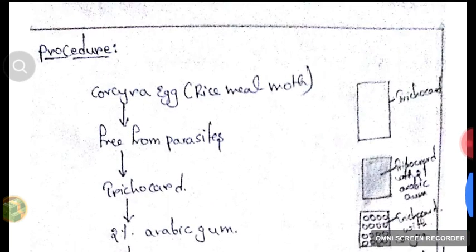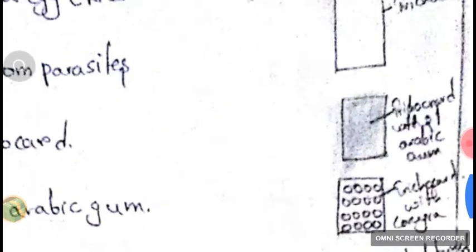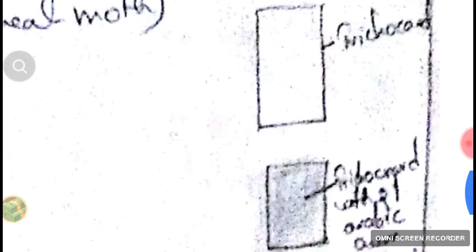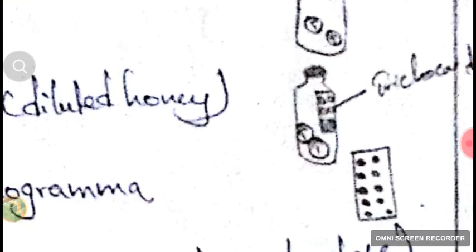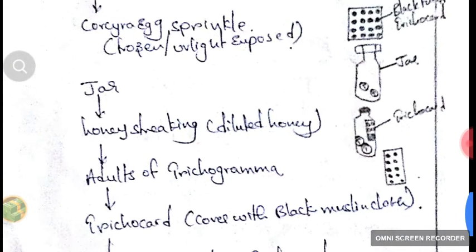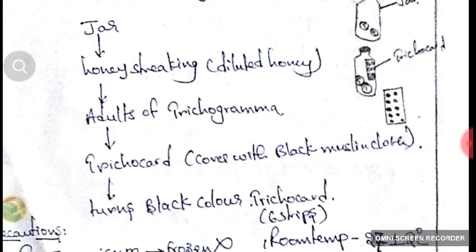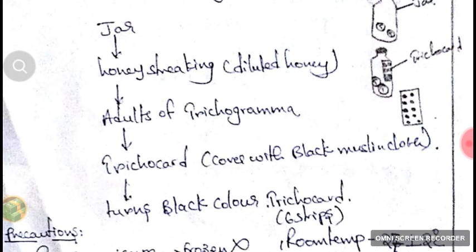Let's see the procedure once again in detail with a diagrammatic representation. First, take the trichocard and apply 2% arabic gum to it. Then sprinkle the eggs of Corcyra, which are white in color. For parasitism, take a jar, insert two adult Trichogramma, cover with black muslin cloth, and set the trichocard. The trichocard turns black within 24 hours. We can then cut the trichocard into 6 strips for further multiplication or staple it directly to leaves in the field.